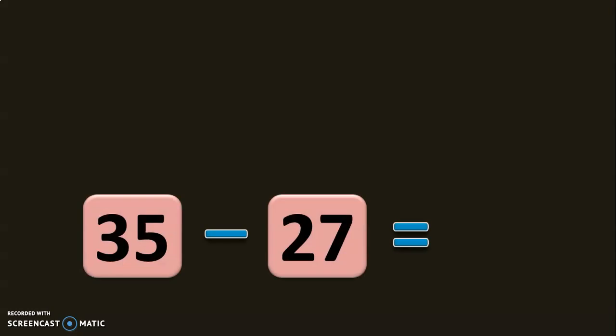Let us take the example of 35 minus 27. Let us do forward subtraction now. So after 27, it is 28, 29, 30, 31, 32, 33, 34, 35.